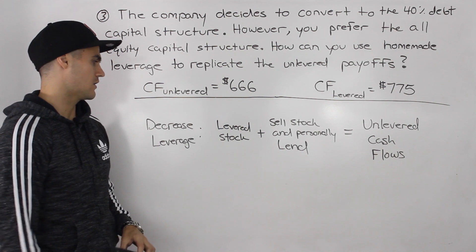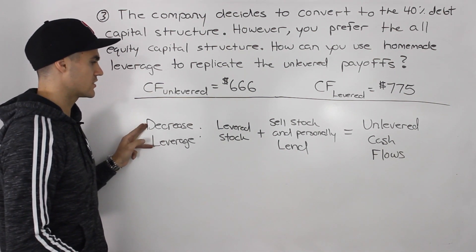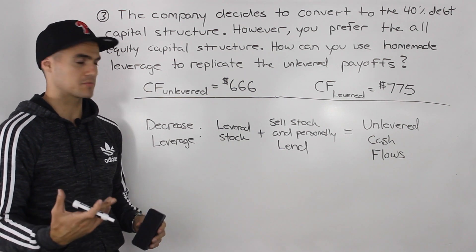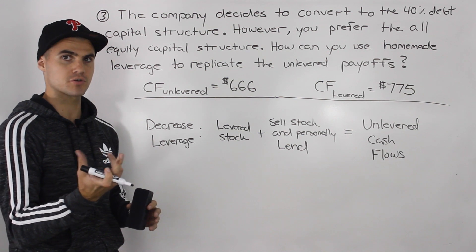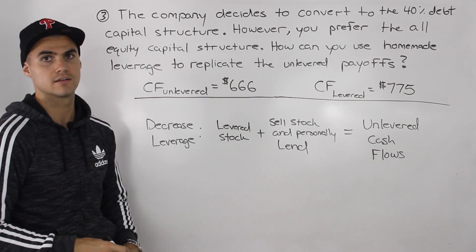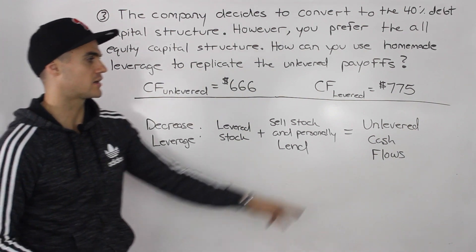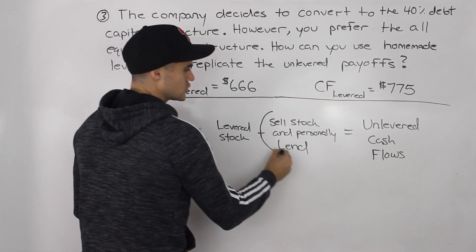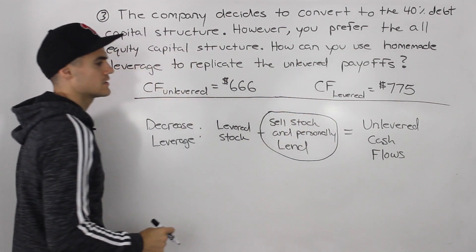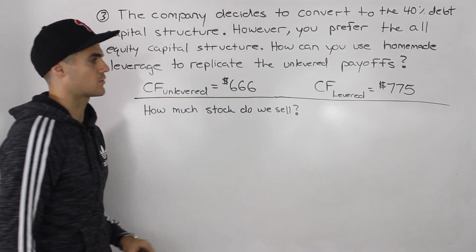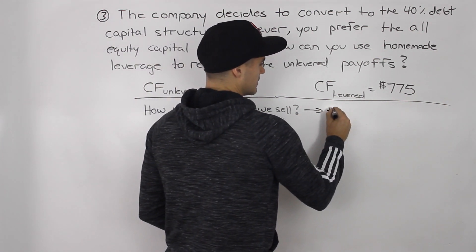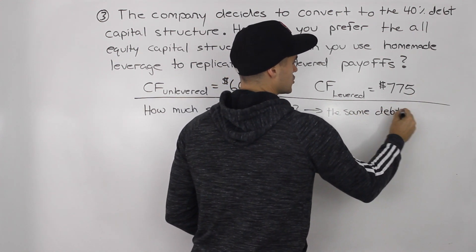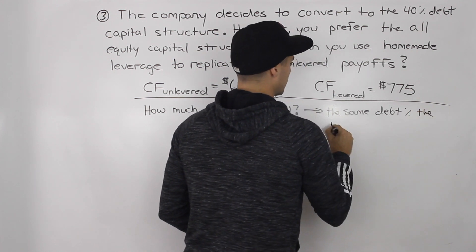To decrease leverage, what we have to do is take our leveraged stock that we currently own, sell some of it, take those proceeds, and personally lend that cash. That process will decrease leverage and give us unlevered cash flows. The question is: how much stock do we sell? The answer is the same debt percentage the levered company has.